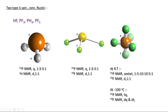In the PF3 molecule, there is a central phosphorus atom and three fluorine atoms attached to it. The F–P–F bond angle is 120 degrees. If you look at phosphorus, it has three neighboring fluorine atoms, each with half nuclear spin, so the splitting pattern for phosphorus will be a quartet. The three fluorine atoms will give a doublet due to one phosphorus.